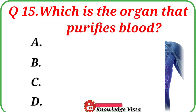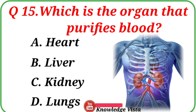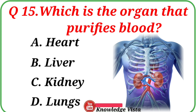Question No. 15: Which is the organ that purifies blood? Your options are: A. Heart, B. Liver, C. Kidney, D. Lungs. Correct answer is Option C, Kidney.